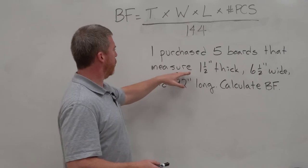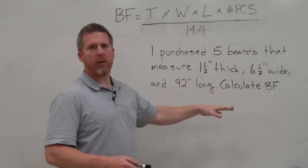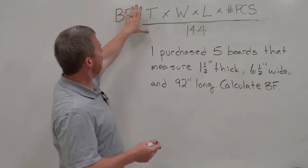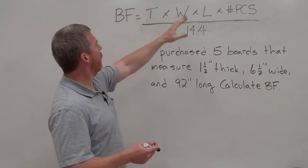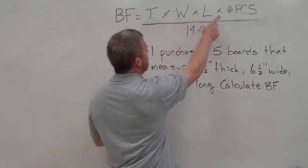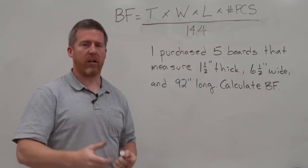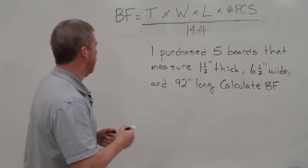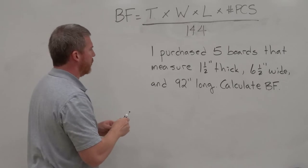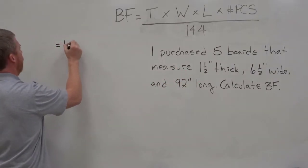So here's a simple one. I purchased five boards that measure one and a half thick, six and a half wide, 92 long. Calculate how many board feet that is. Very straightforward question. In our formula up here, I'm looking for four numbers. So let's see if we can track down those four numbers. We have our equal sign, board feet equals. I need thickness first. We just go down and it says one and a half thick. It's even labeled for me. 1.5.